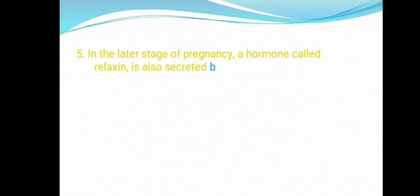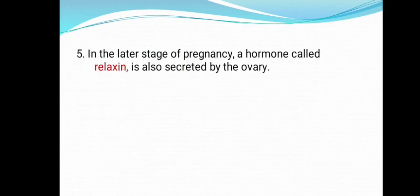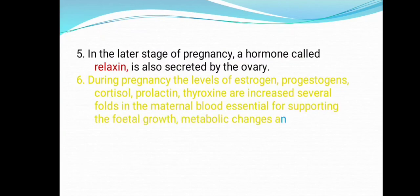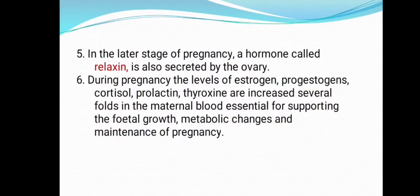In the later stage of pregnancy, a hormone called relaxin is also secreted by the ovary. During pregnancy, the levels of estrogen, progestogens, cortisol, prolactin, and thyroxin are increased several folds in the maternal blood, which is essential for supporting fetal growth, metabolic changes, and the maintenance of pregnancy.